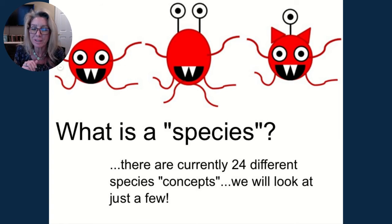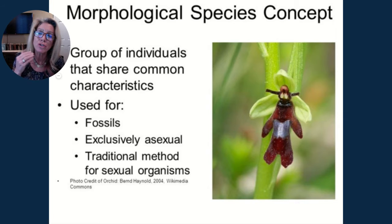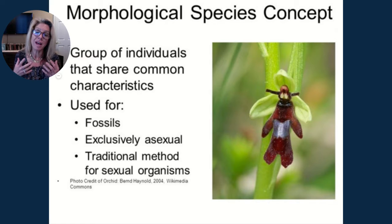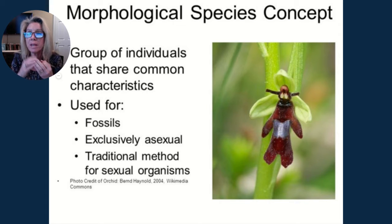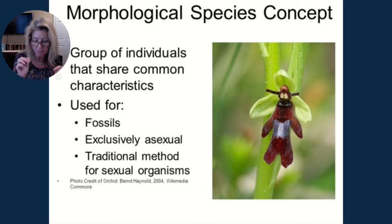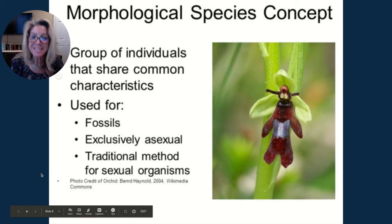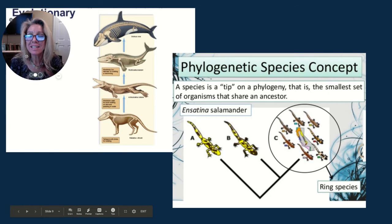The morphological species concept is probably the oldest — it is based on structures. This is really good if you're a paleontologist looking at fossils, because you can't analyze DNA, protein sequences, behavior, or mating calls. All you have is anatomy. Under this concept, species are distinguished from each other by distinct physical characteristics.